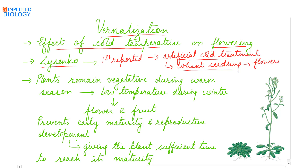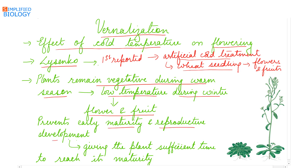Plants remain vegetative during the warm season. They receive low temperature during the winter, after which they grow, flower, and fruit. Vernalization prevents early maturity and reproductive development, giving the plant sufficient time to reach maturity. Until cold treatment is given, the plant remains vegetative; after low temperature treatment it flowers and fruits.